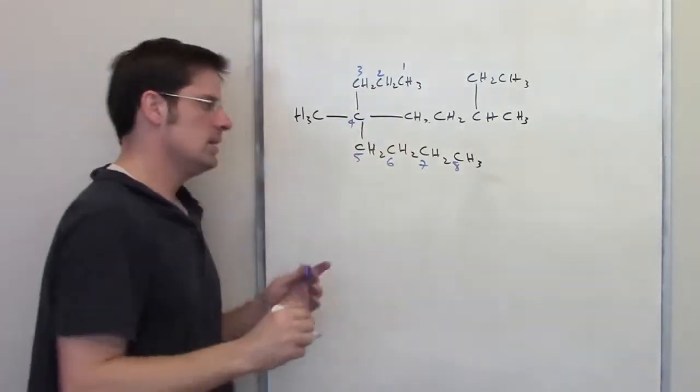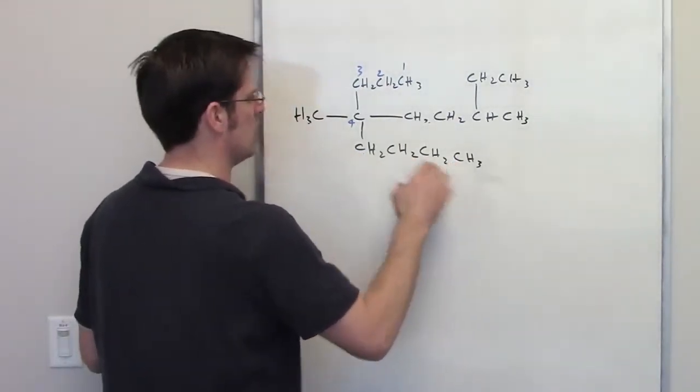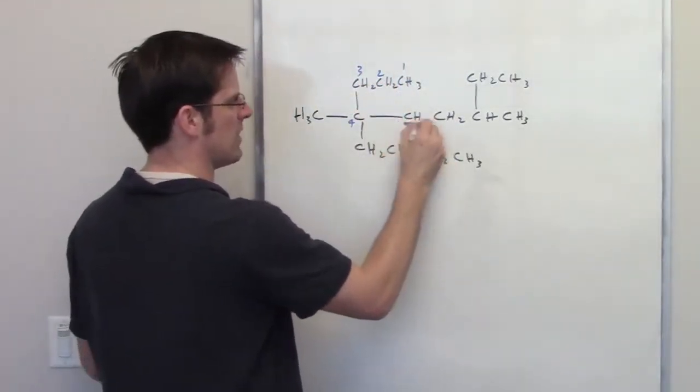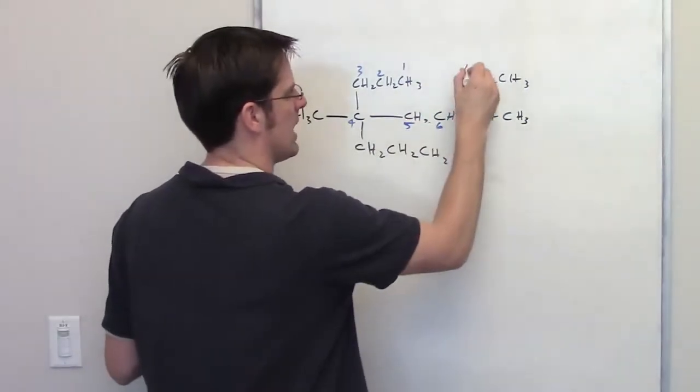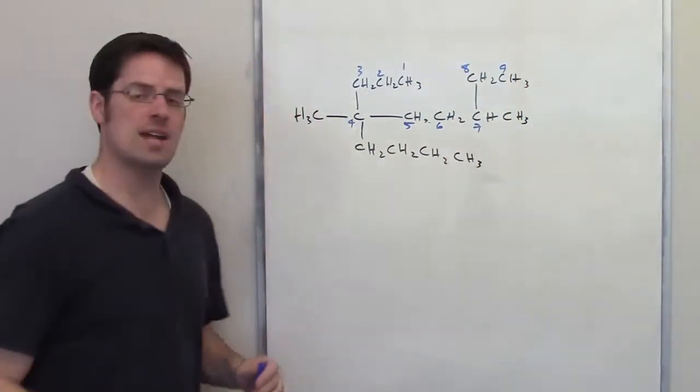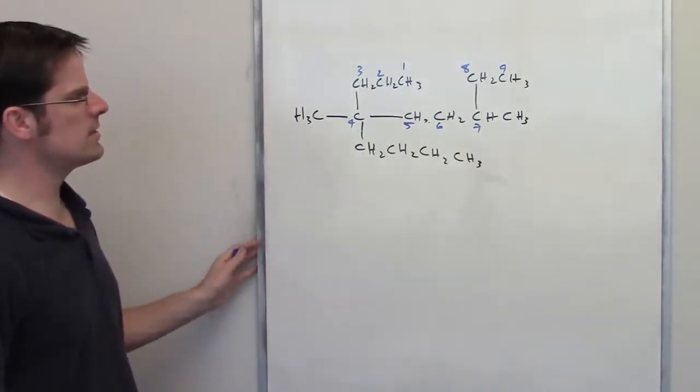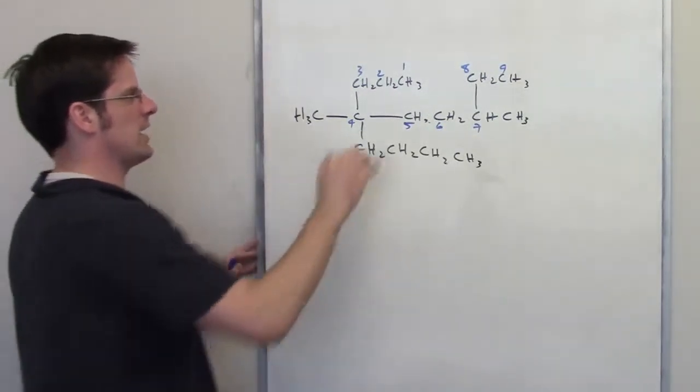Or what if I try a different direction? Could I go instead along this, 1, 2, 3, 4, and then I go 5, 6, 7, 8, 9. That's even longer. Is there another direction that I could go?